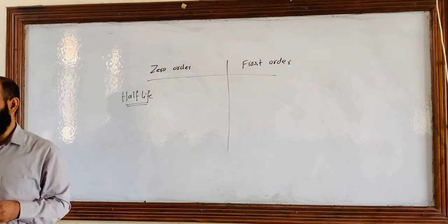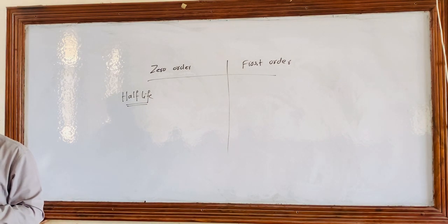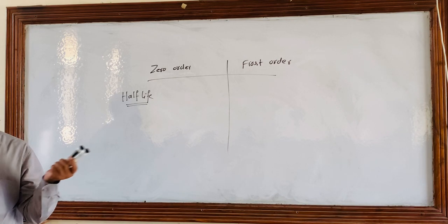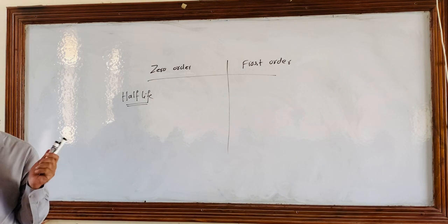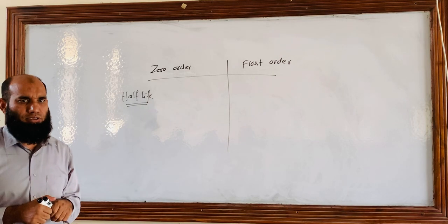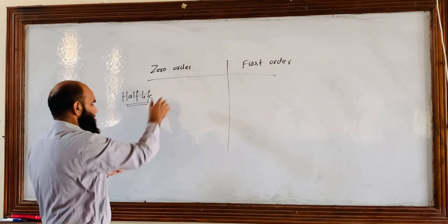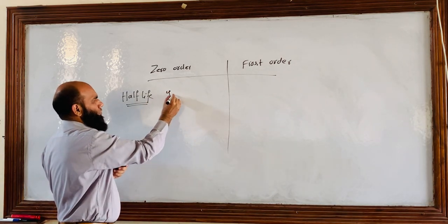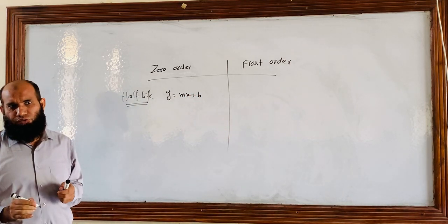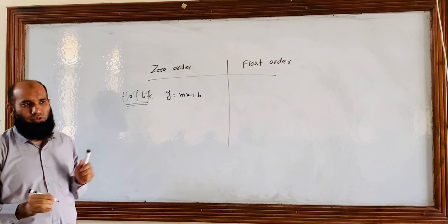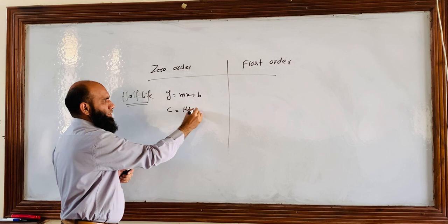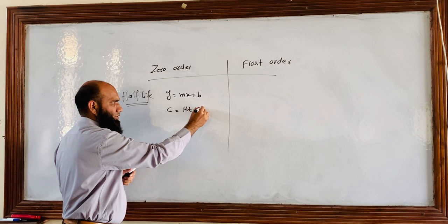In case of zero order, what would be the formula of half-life, and in case of first order, what would be the formula of half-life. We will first derive it, then make some practice in the form of some numericals. The zero order equation is y is equal to mx plus b.